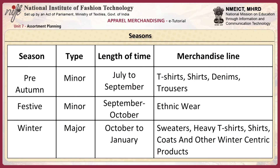For the festive season (a minor season during September and October), the merchandise line is mainly ethnic. For the winter season (a major season from October to January), the merchandise line includes sweaters, heavy t-shirts, shirts, coats, and other winter-centric products.